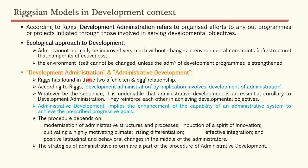Development administration is administration done for the development of society. Administrative development is development of the administration itself — not directly for society. So development administration is for society, and administrative development is for the improvement of administration. Riggs found a chicken-and-egg relationship between these two terms.